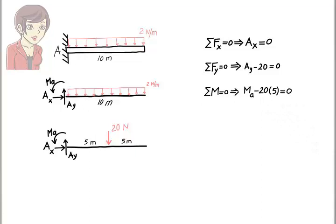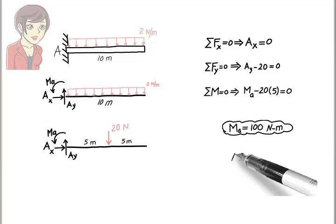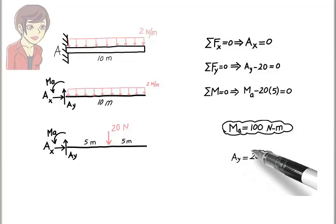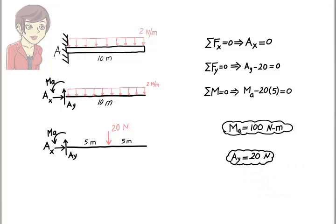Solving the last equation for Ma gives Ma equals 100. From the second equation we get Ay equals 20. And the first equation gives us Ax equals zero.